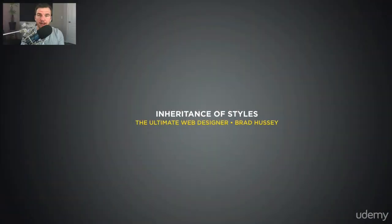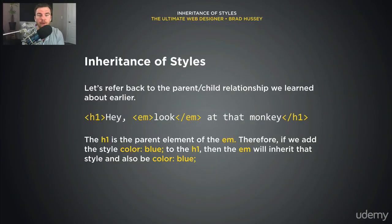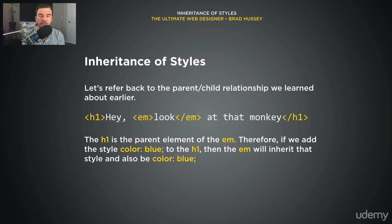In CSS, there's something called the inheritance of styles. Let's refer back to the parent-child relationship we learned earlier in our HTML lectures. Here's an example: a level one heading wrapping around some text that says 'hey, look at that monkey,' and the word 'look' is wrapped in an em tag. The level one heading is the parent element of the em tag. Therefore, if we add the style color blue to the h1, then the em will inherit that style and also be the color blue.